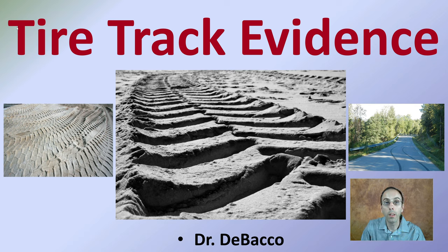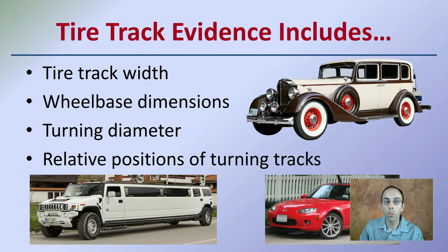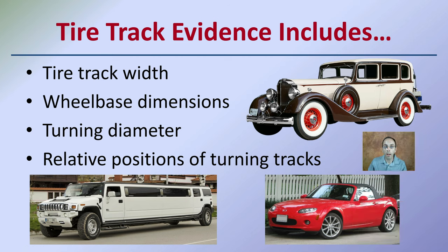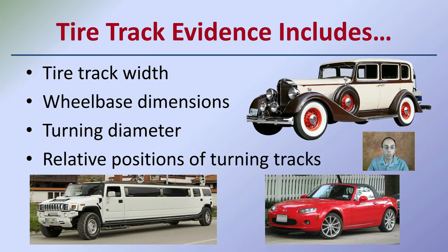Here we're going to look at tire track evidence and what's included in the collection of this particular form of evidence. When documenting tire tracks, we want to look at the width of the tire track, consider the wheelbase dimensions, and if there was a turn involved, we want to get the turning diameter and the relative position of the turning tracks. This all plays into determining potentially what size or proportion vehicle made those tracks.